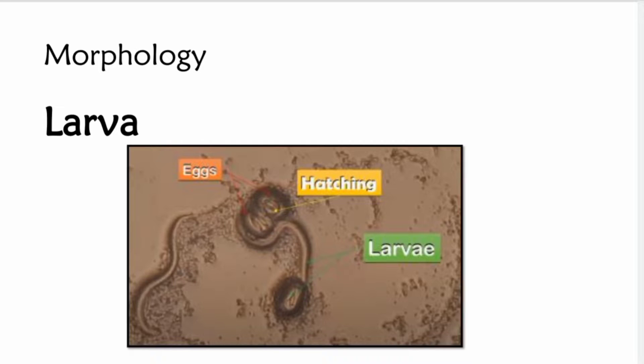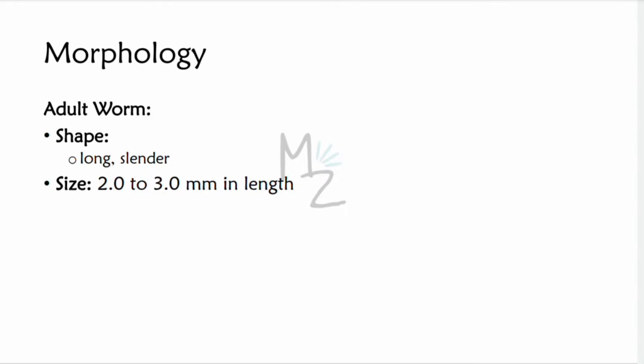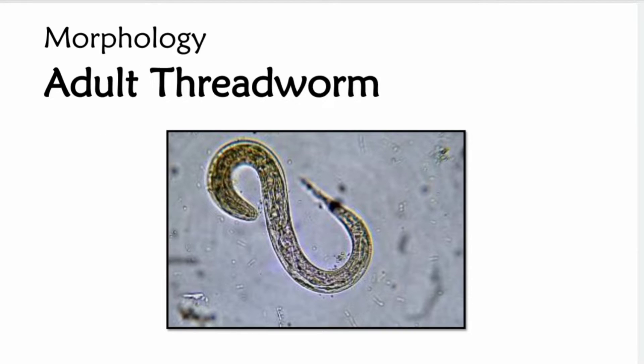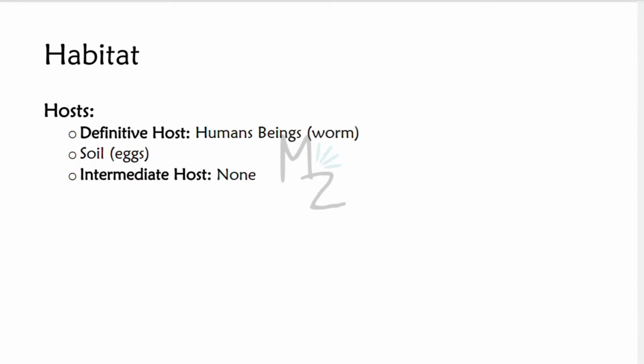The adult worm is long and slender, varying in size from 2 to 3 millimeters in length — this is how the adult Strongyloides stercoralis looks. Regarding habitat, the definitive hosts are human beings. In the soil, filariform larvae exist for some time, and we'll discuss the soil cycle in the life cycle section. Strongyloides stercoralis has no intermediate host.